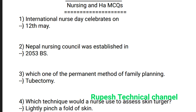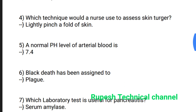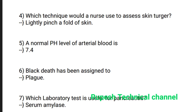Question number 1: International Nurses Day is celebrated on 12th May. Question number 2: Nepal Nursing Council was established in 2053 B.S. Question number 3: Which is a permanent method of family planning? Vasectomy.